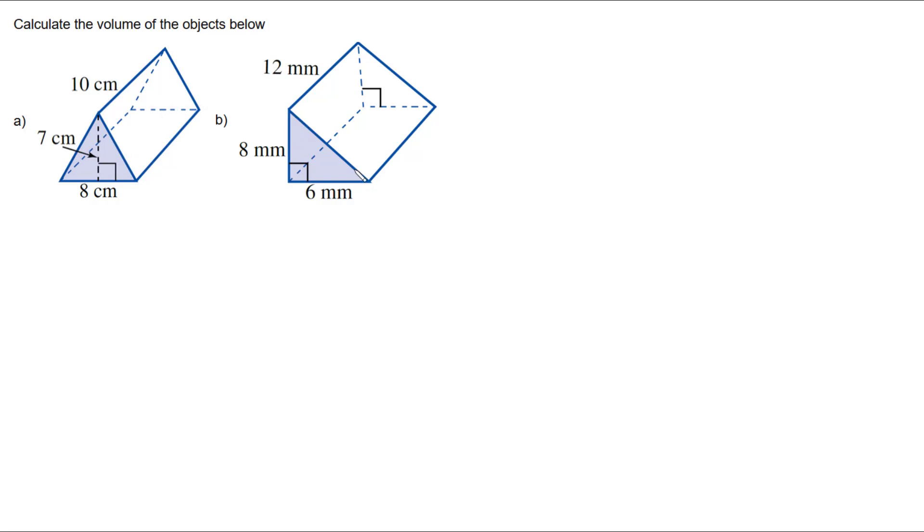Same here, we have this right angle triangle, extends all the way through to this right angle triangle, meaning that this is the base of these prisms. Now, the volume of any prism can be calculated by doing area times height, the area of the base times height.